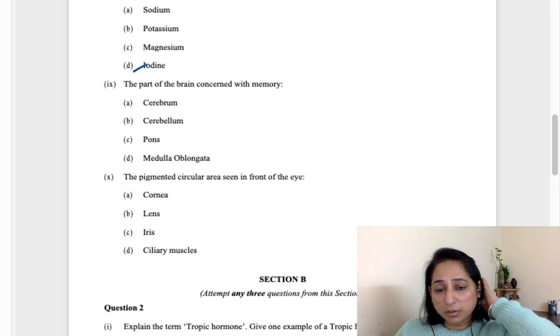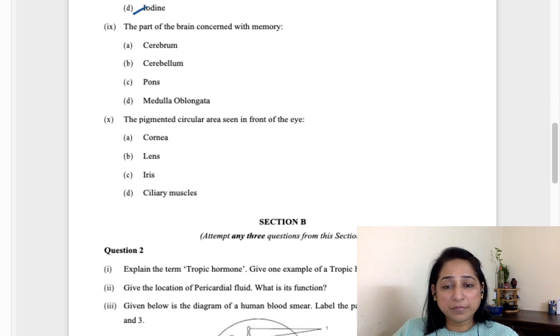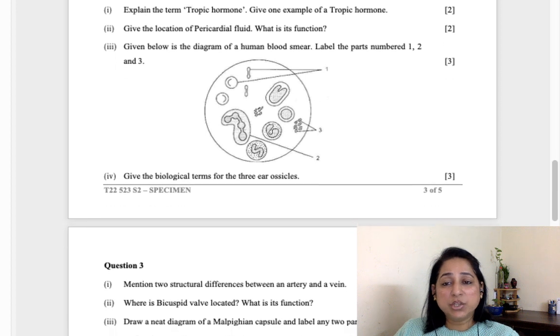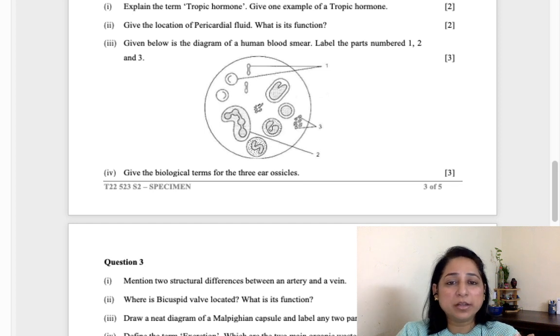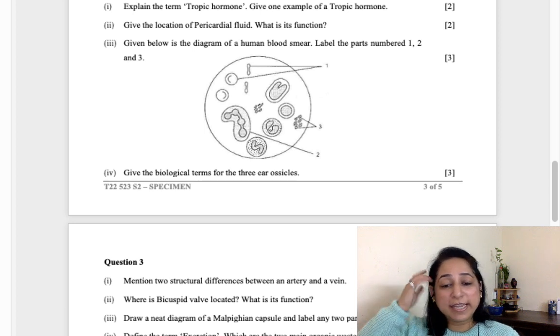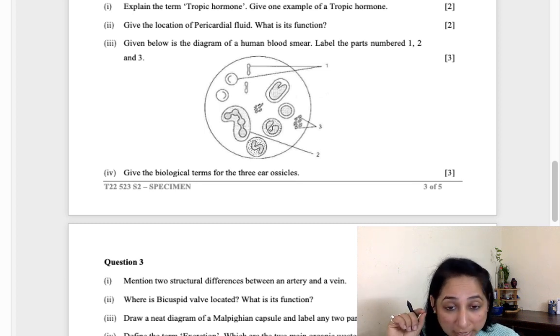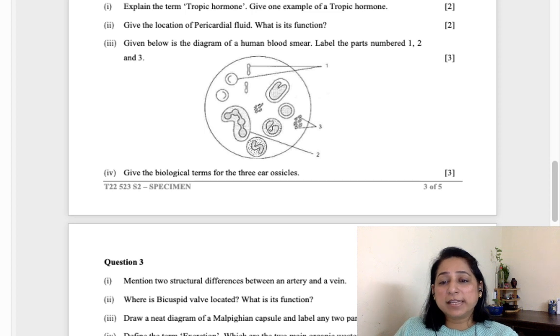The mineral element needed for the functioning of thyroid gland is iodine. When it is less it leads to goiter. The part of the brain concerned with memory is cerebrum, which is also known as the thinking and reasoning part of the brain. The pigmented circular area seen in front of the eye is the iris. These MCQs can be given from anywhere, all four chapters will be covered. For MCQs you need to thoroughly make liner-wise notes, not paragraphs, point-wise notes which will help you a lot to solve the sample papers.